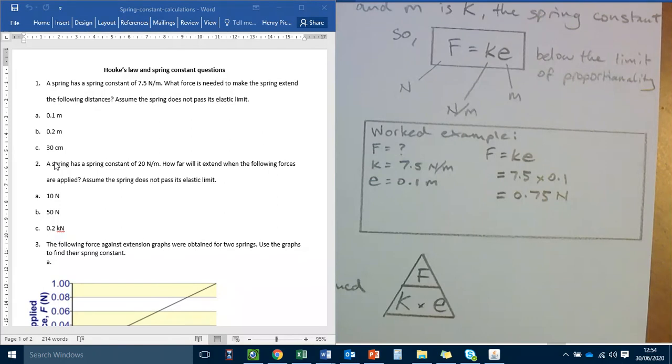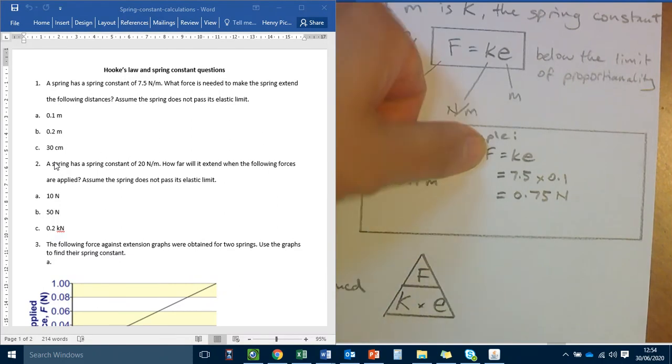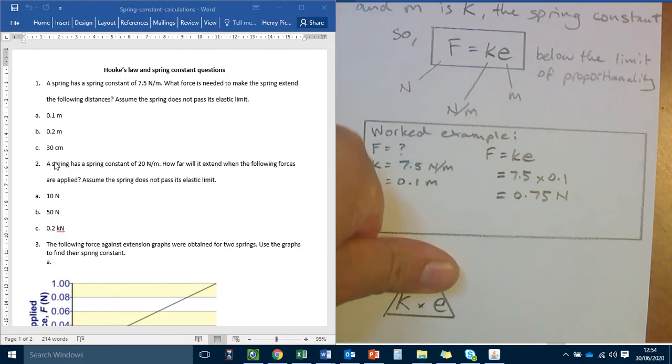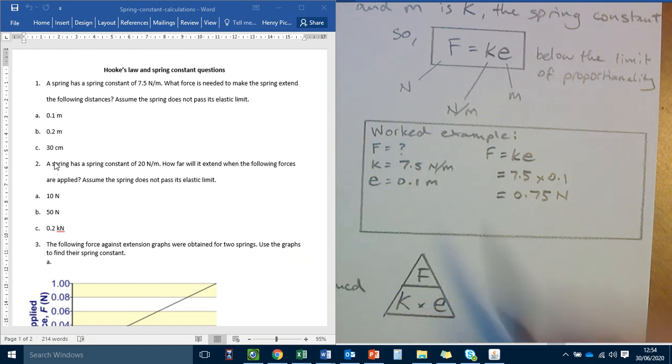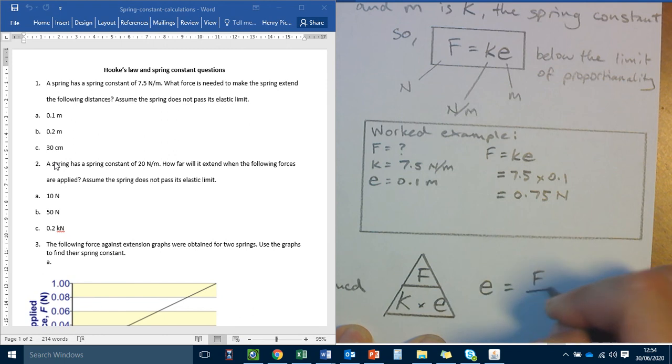And if we remember the triangle, but we don't remember this, if we're looking for force, cover the force, and we've got force equals K times E. So we can use this, for example, to work out that E equals F divided by K. Or that K equals F divided by E.